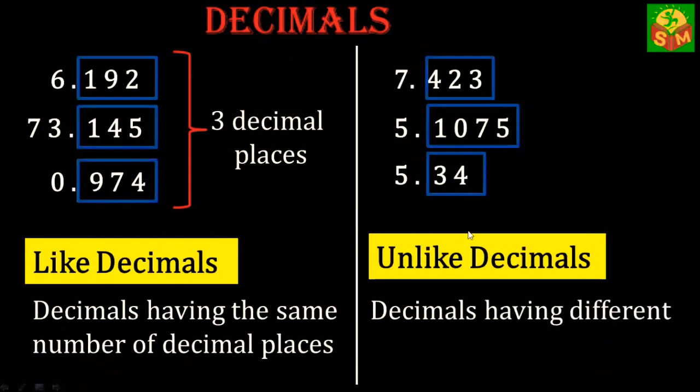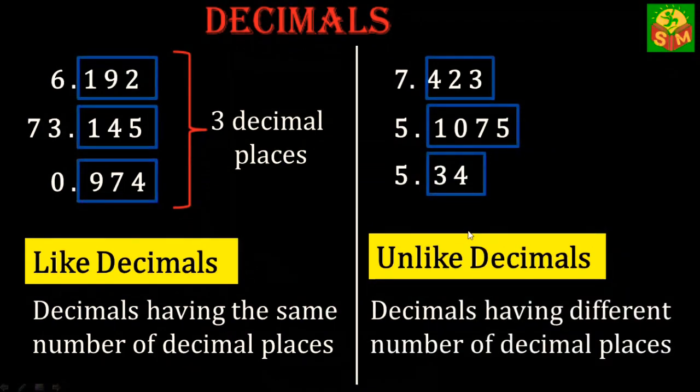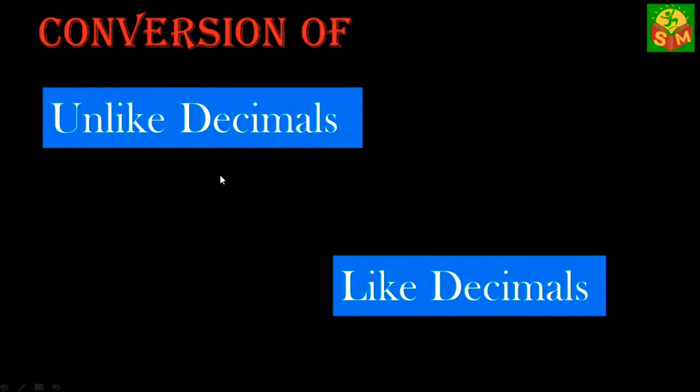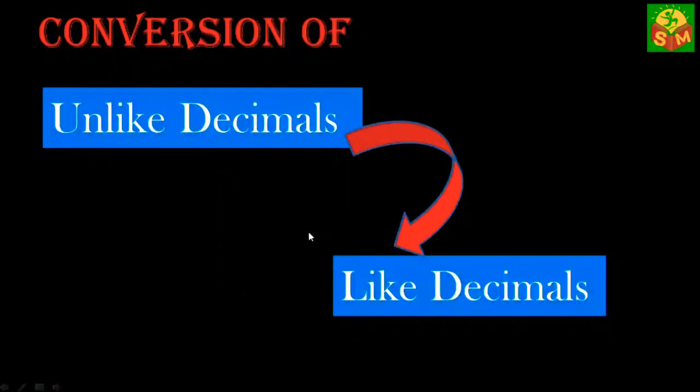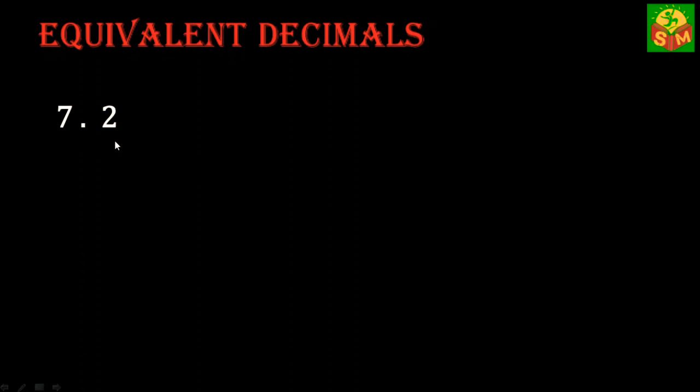So let me ask you a very simple question: can we convert unlike decimals to like decimals? To answer this we need to understand a very simple concept. Look at the decimal 7.2 - 7 is in the ones place and 2 is in the tenth place, so this can be written as 7 times 1 plus 2 times one-tenth.